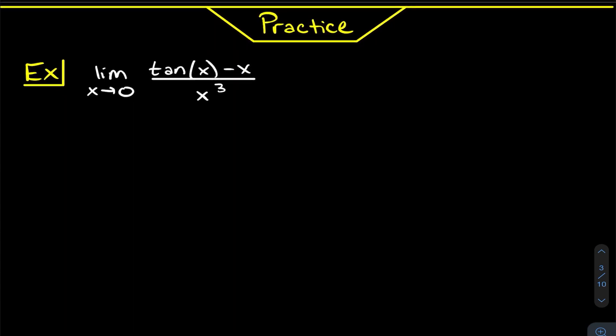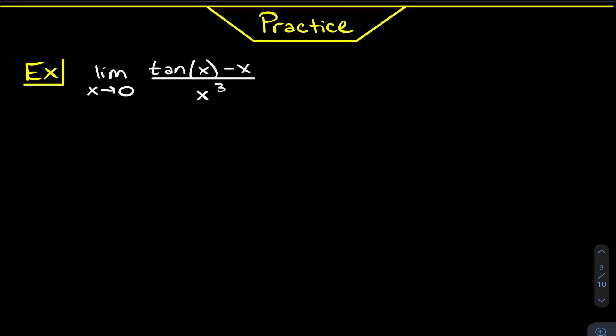Moving on to a harder example. With this problem, we may actually have to use L'Hôpital's rule more than once — in this case three times. You should also use some limit laws, but the same idea applies: take a derivative of the top, take a derivative of the bottom. First, always check for the indeterminate form. Plugging in zero everywhere gives zero minus zero over zero cubed — a zero over zero case — so this qualifies.